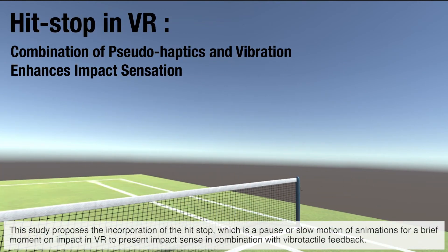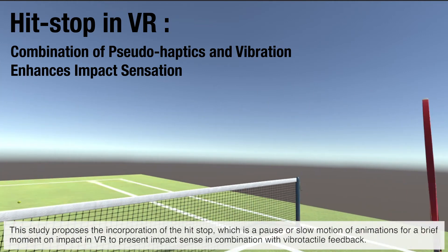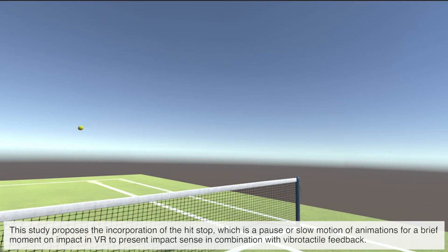This study proposed the incorporation of the hit stop, which is a pause or slow motion of animations for a brief moment on impact, in VR to present impact sense in combination with vibrotactile feedback.